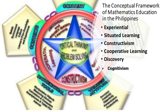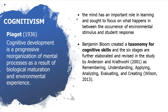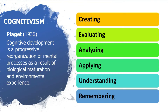Let's go to the learning theories. Number one, we have cognitivism. Piaget, one of the cognitive theorists, promoted the concept that the mind has an important role in learning, and sought to focus on what happens in between the occurrence of environmental stimulus and student response. As a reaction, Benjamin Bloom created a taxonomy for cognitive skills, and the six stages are further elaborated and revised by Anderson and Krathwohl as: remembering, understanding, applying, analyzing, evaluating, and creating.